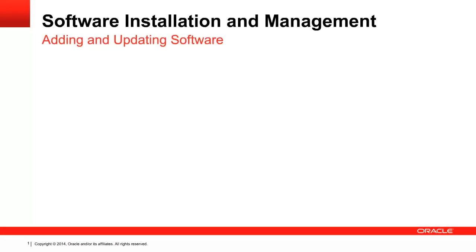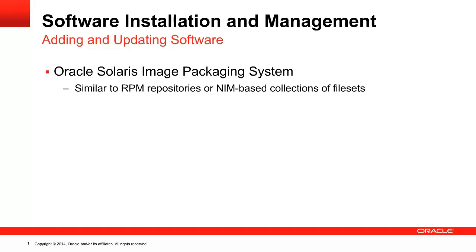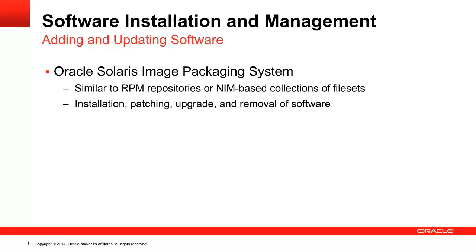When it comes to software installation and management, Oracle Solaris 11 uses the Image Packaging System as its software packaging model. Image Packaging System provides software management functionality similar to RPM repositories or NIM-based collections of file sets on AIX. Image Packaging System handles the entire software lifecycle, including installation, patching, upgrades and removal through the command line and a GUI interface. During installation, Image Packaging System performs automatic dependency checks and adds any additional packages and libraries that are required, which simplifies the installation.